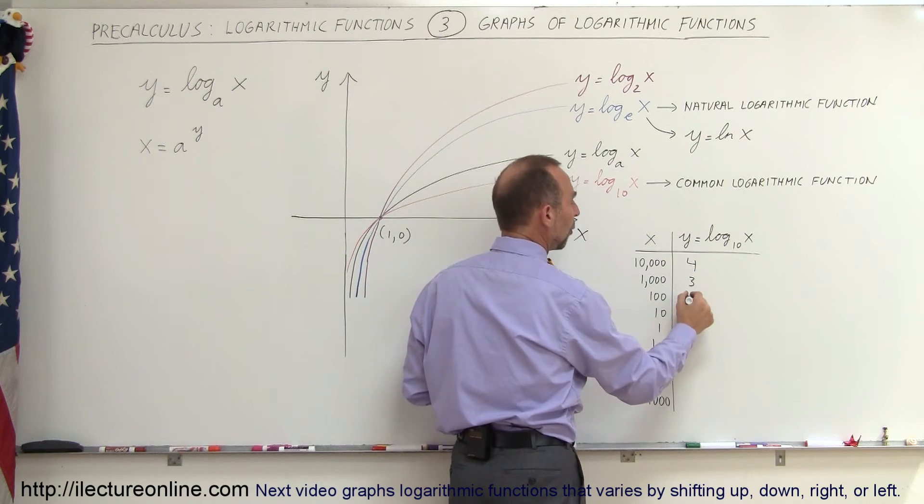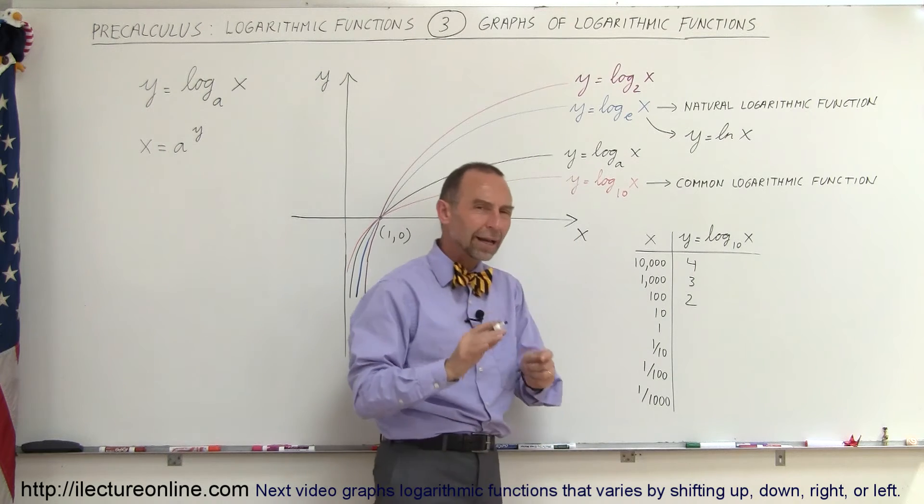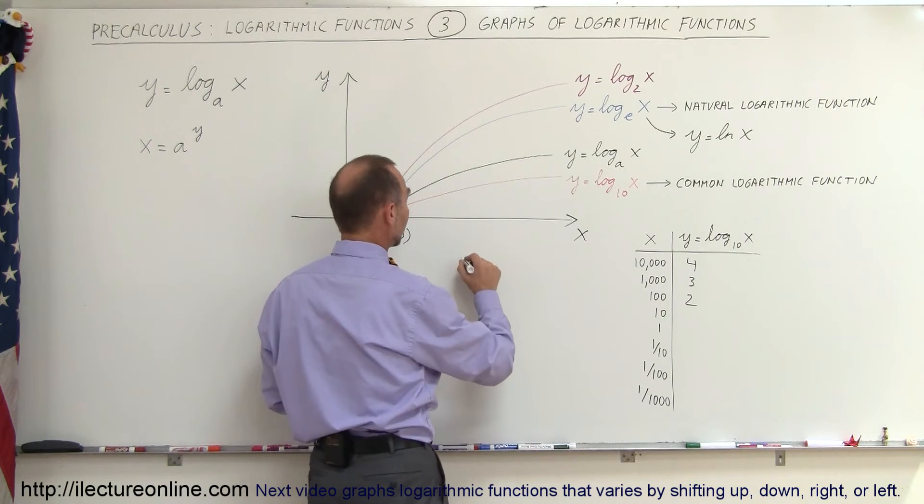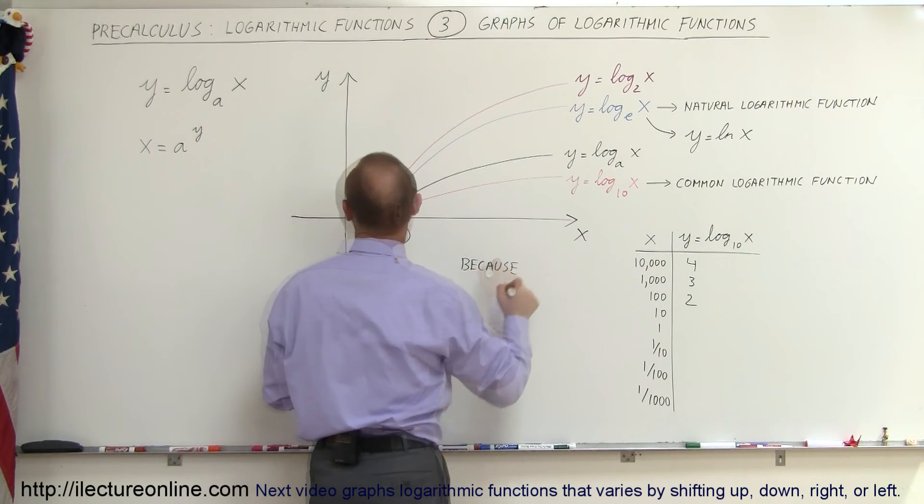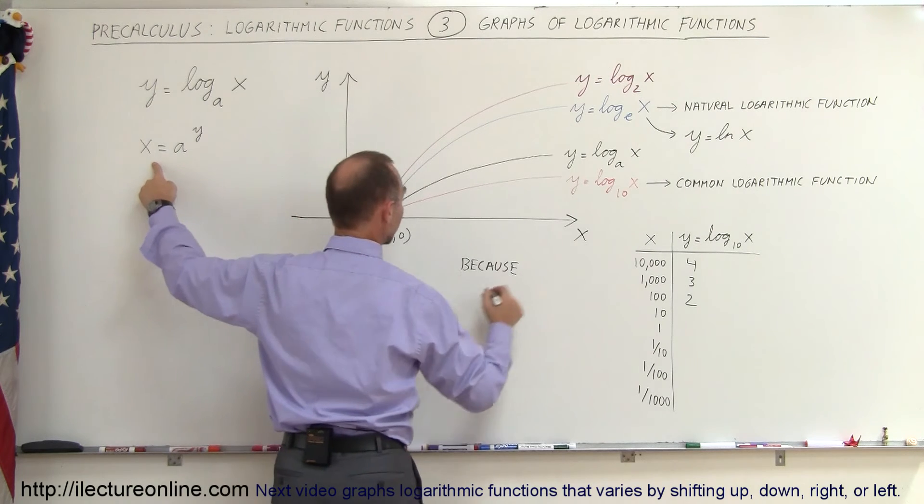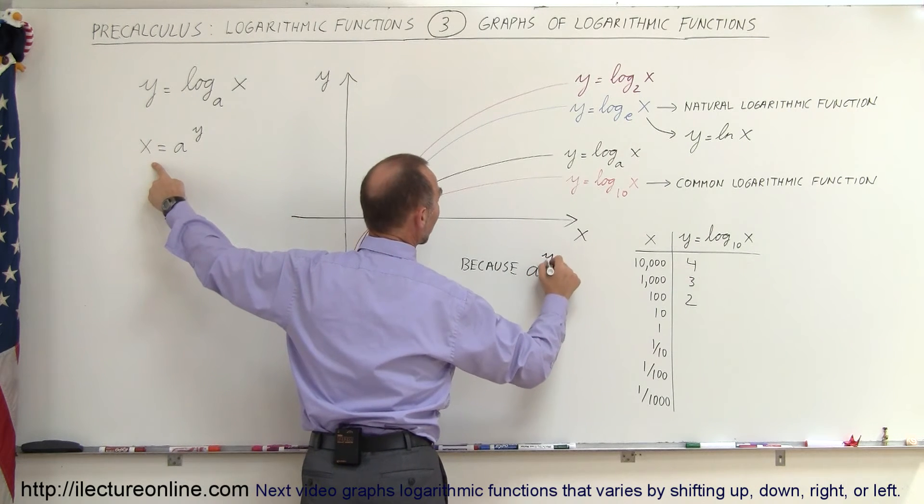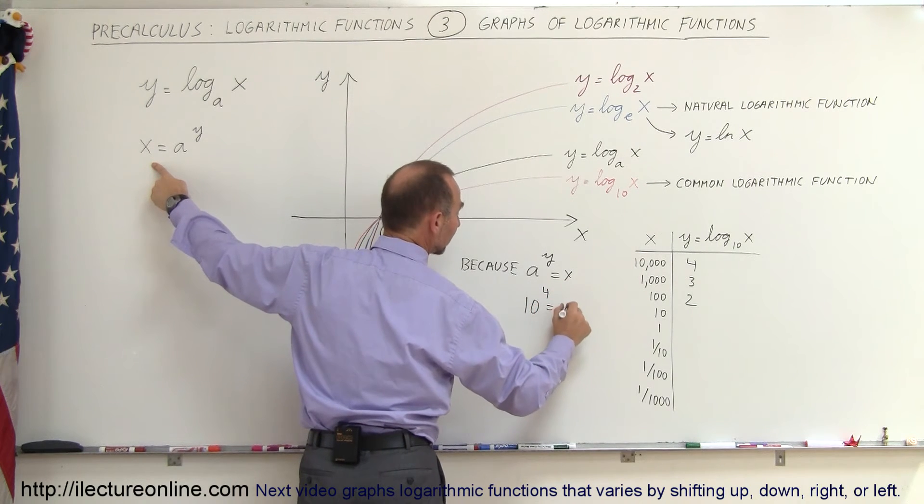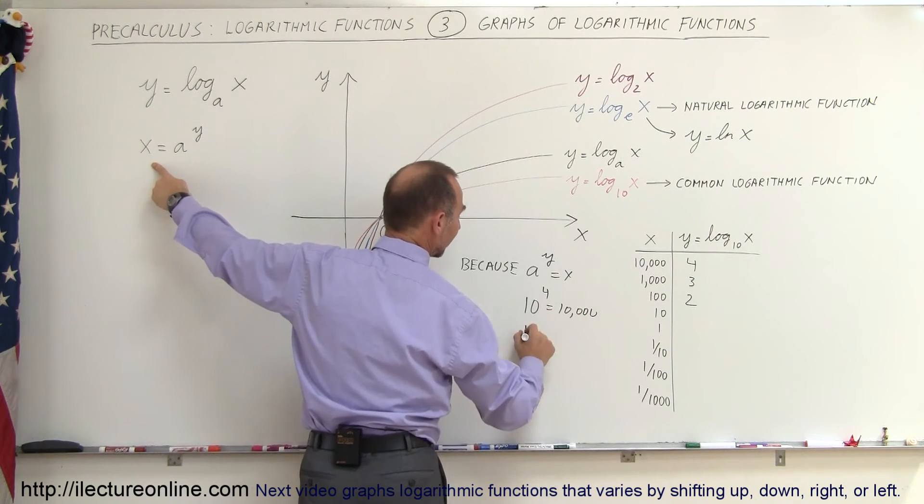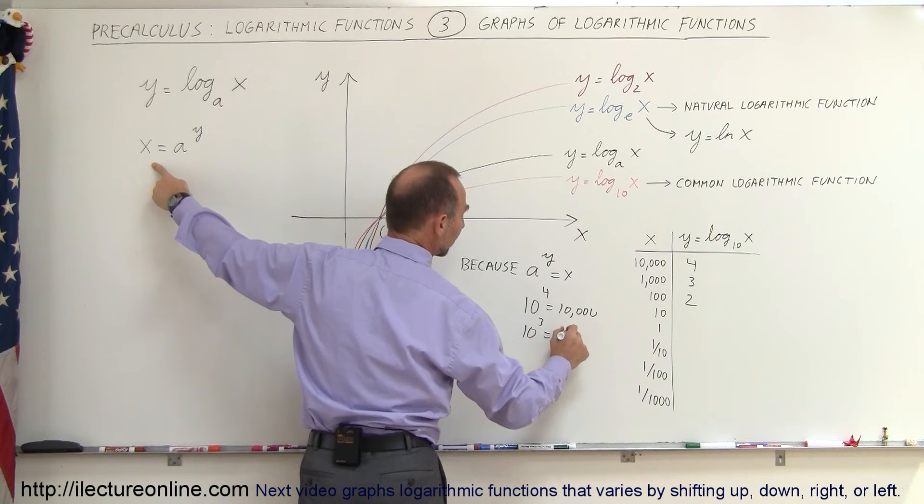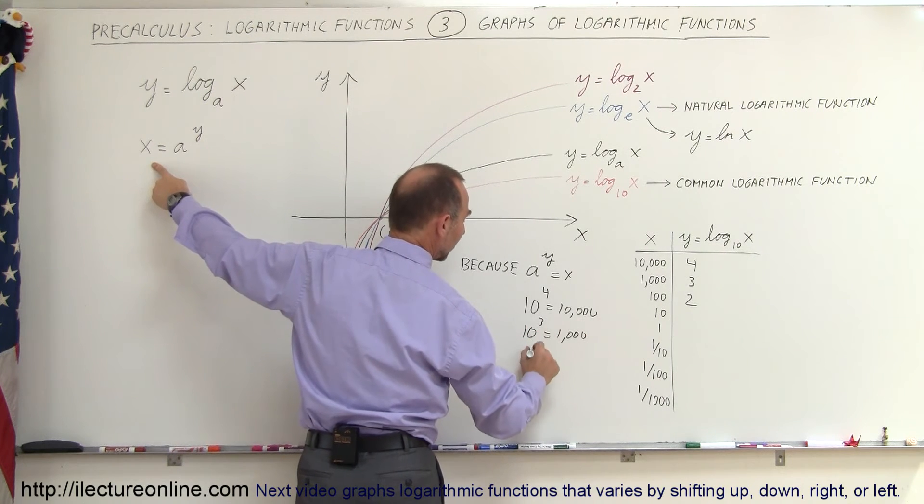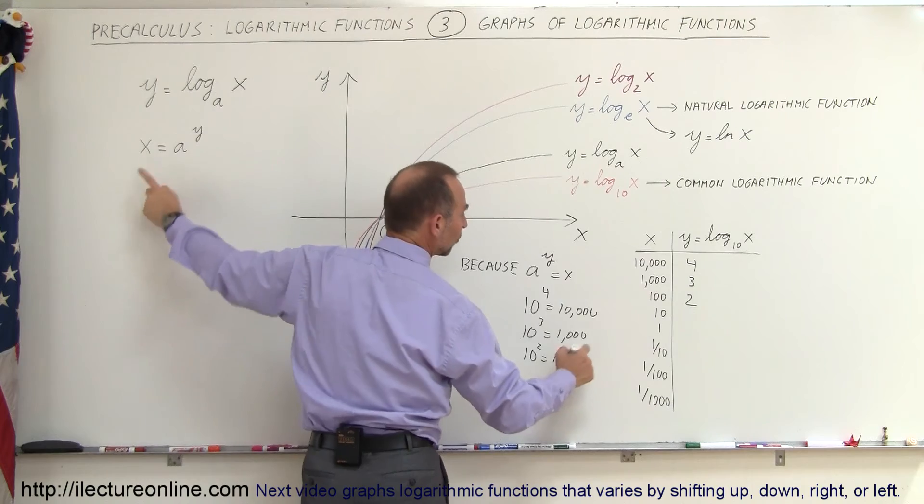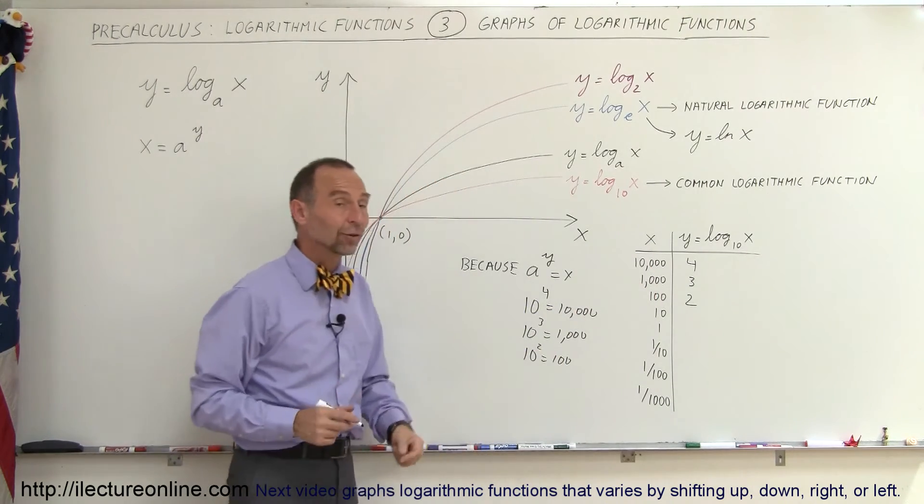When x is equal to 100, y is equal to 2. Again, you say, well, why can I say that? And the thing you can say is because we go back to this concept right here. A to the y power equals x. So, in this case, 10 to the fourth power is equal to 10,000. 10 to the third power is equal to 1,000. 10 to the second power is equal to 100, and so forth. And that's how you can find the values of y.